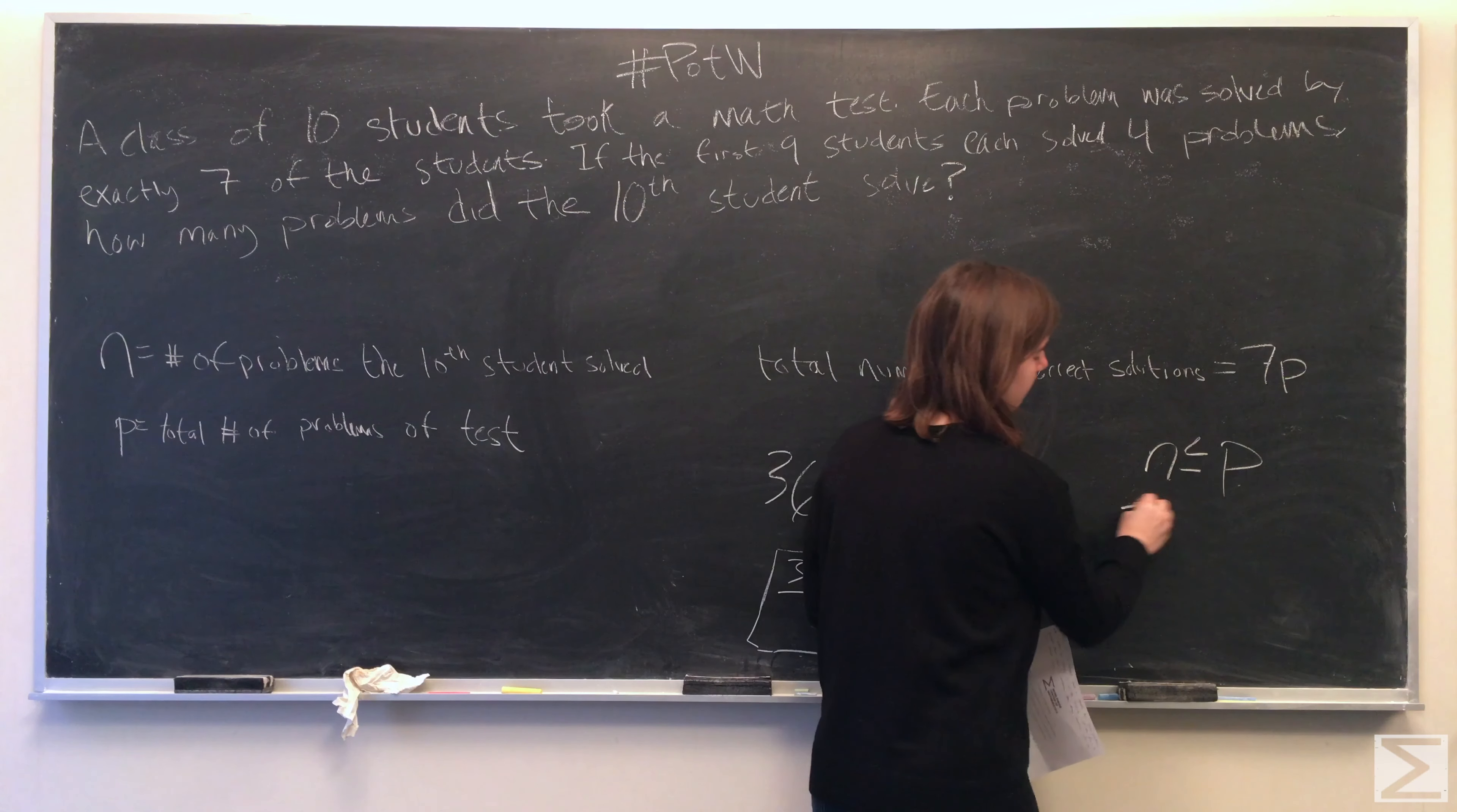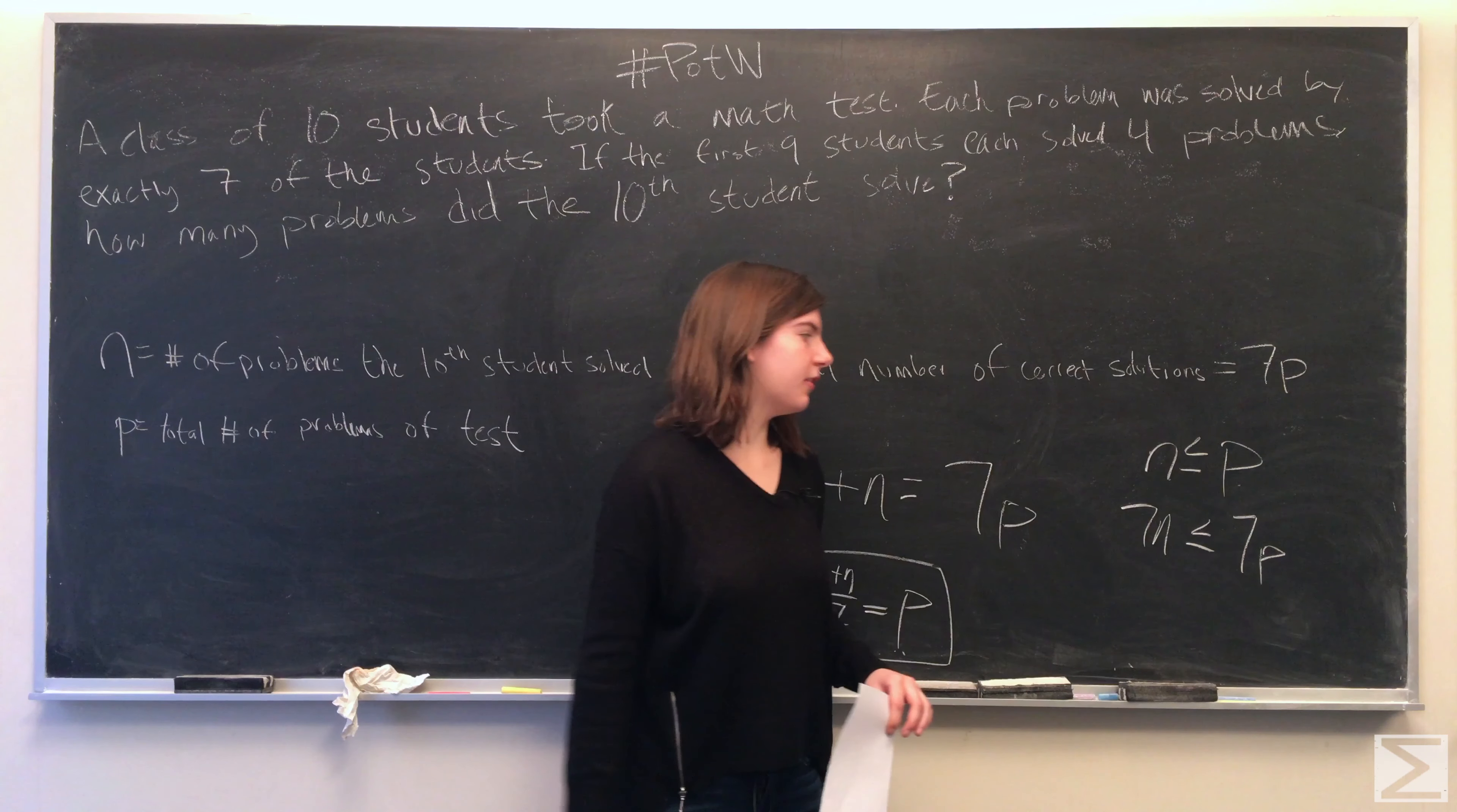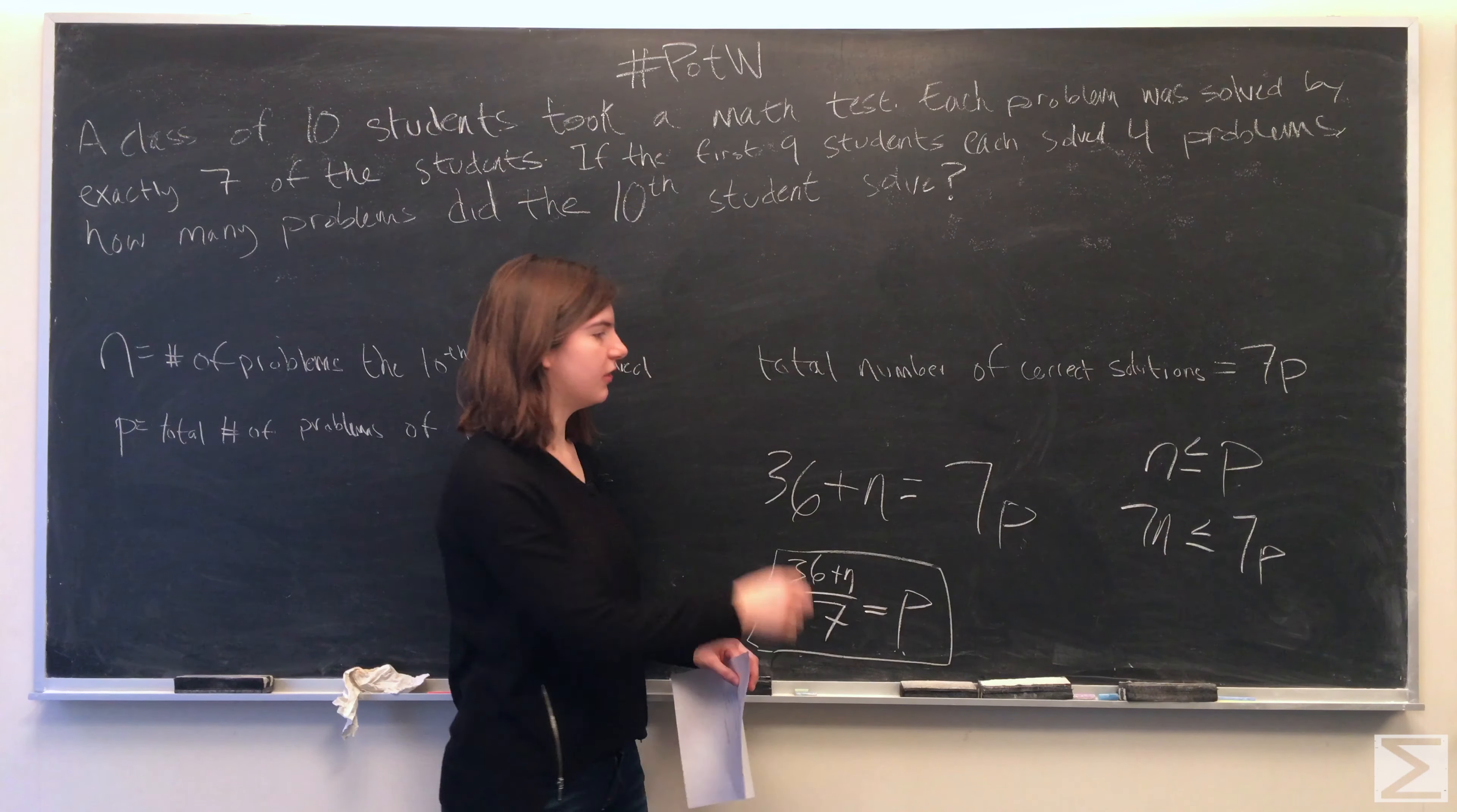If you multiply both sides by 7, we have 7n is less than or equal to 7p. And we know that 7p is equal to 36 plus n.